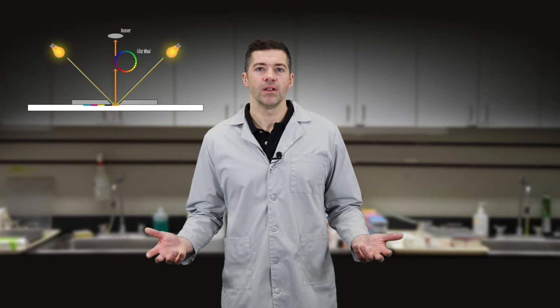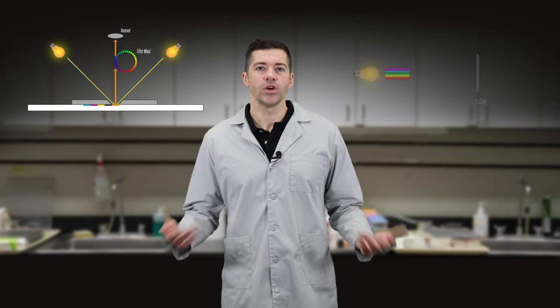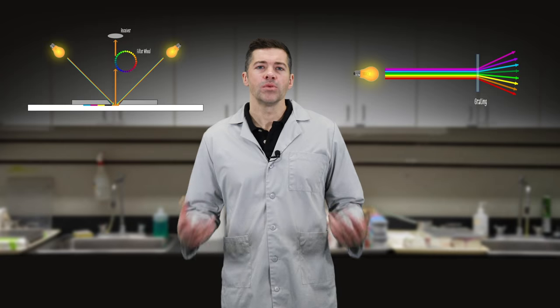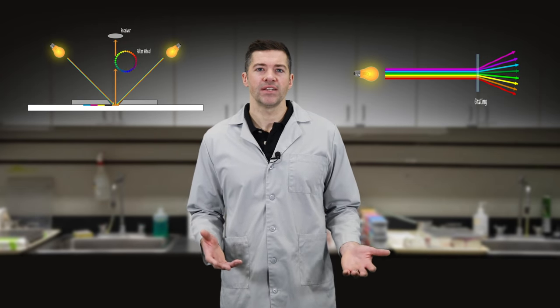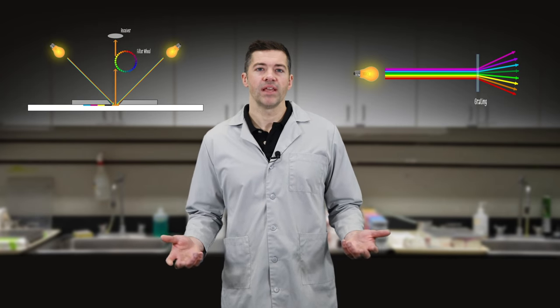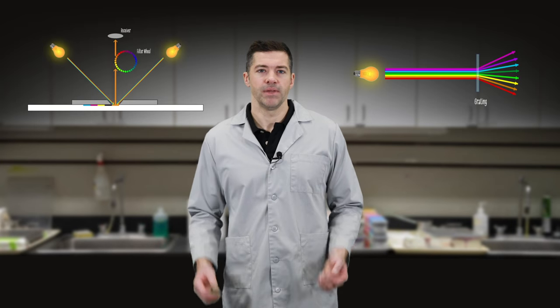This is typically achieved within an instrument using a spinning filter wheel of specially designed colors or diffraction grading. The resulting measurement is the sample's reflectance curve with a varying wavelength from around 400 to 700 nanometers. From this, we can compare the curves of two samples to see if they are a match.